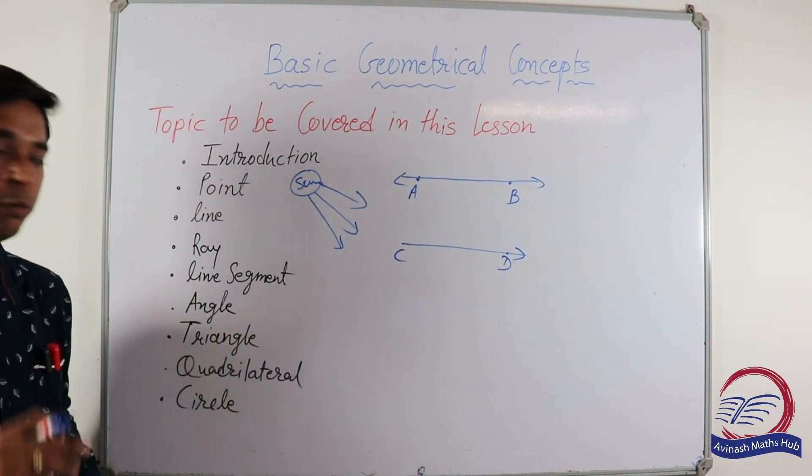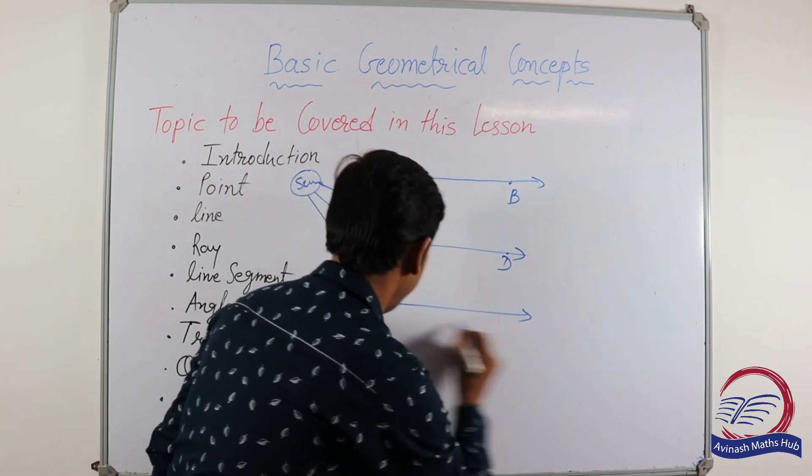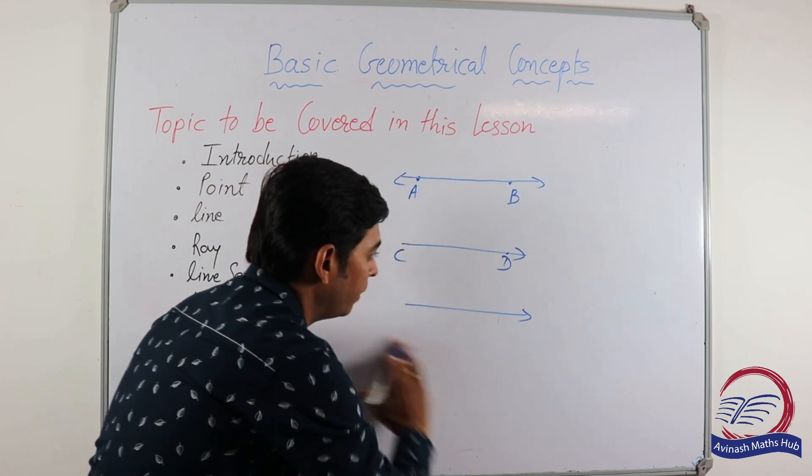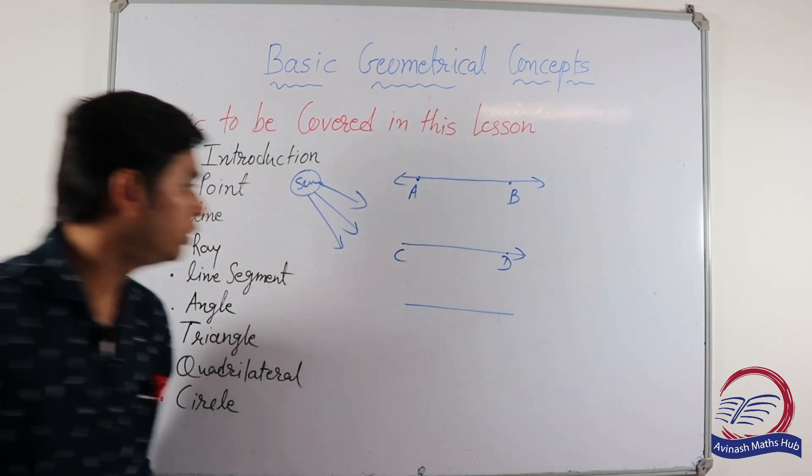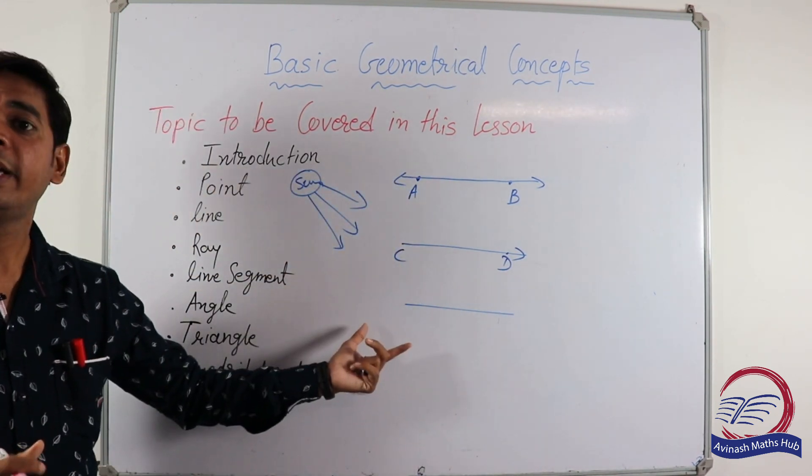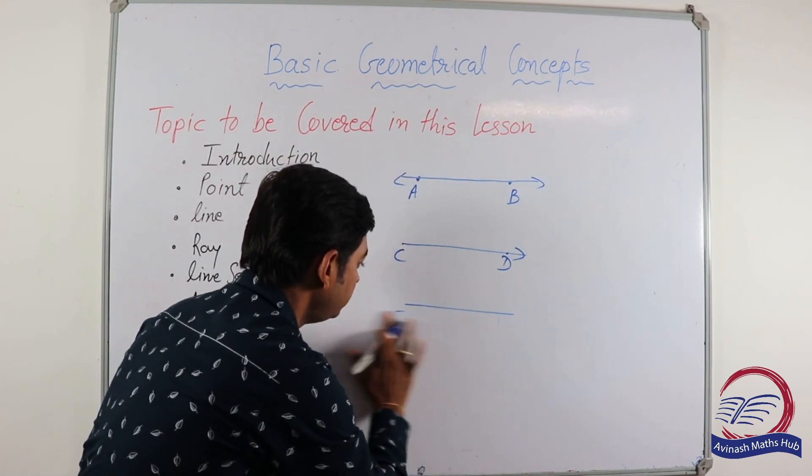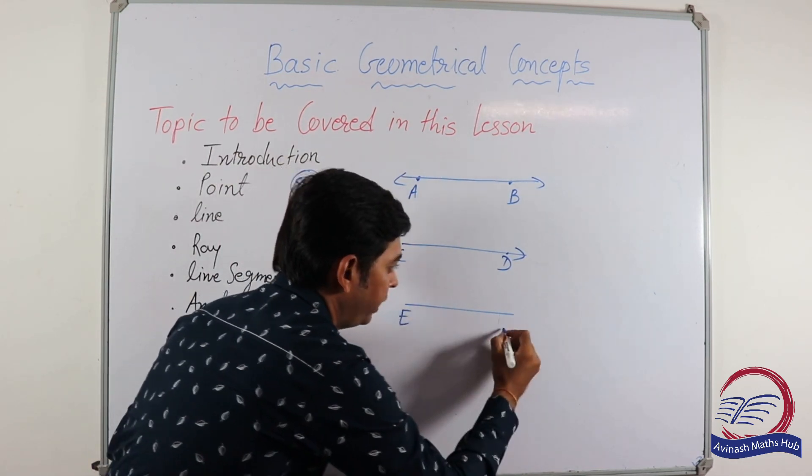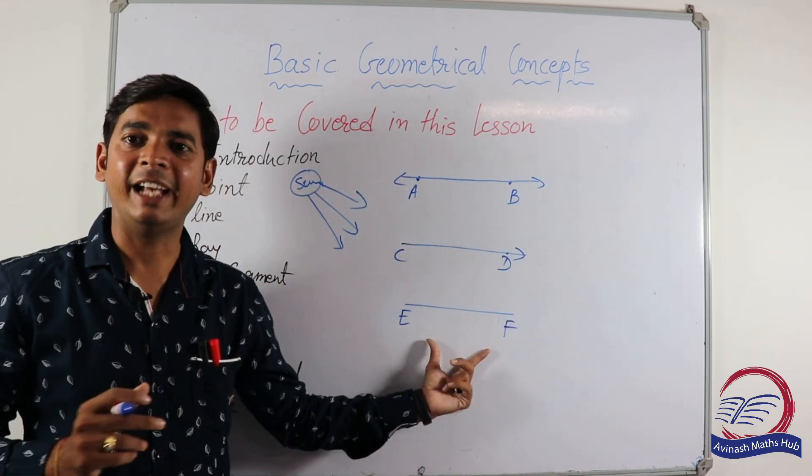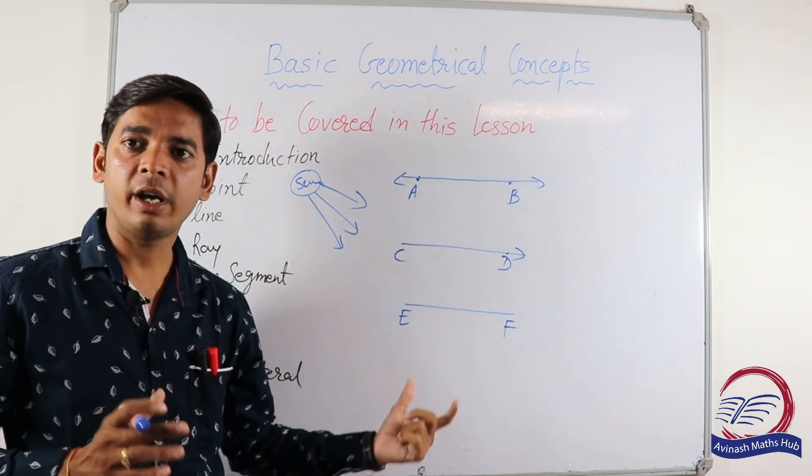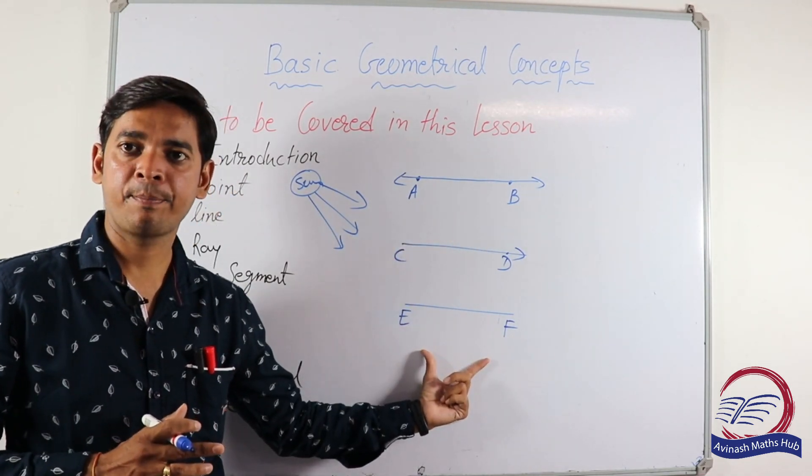Now next is line segment. What is a line segment? Now this is a line. If we stop it on both sides, it becomes a line segment. Point E and point F. Now it's become the line segment. A line segment is part of a line. It's a part of the line.